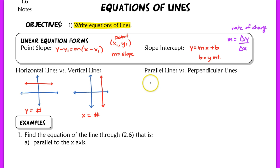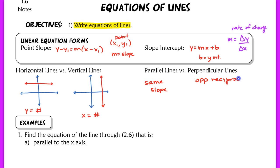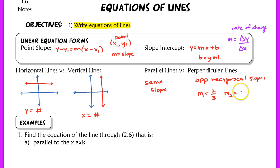Parallel lines are always going to have the same slope. And if you have two lines that are perpendicular, they're going to have opposite reciprocal slopes. So for example, if the slope of one line is 2/3, the slope of a line perpendicular to that line would have to be negative 3/2.